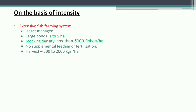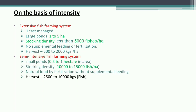On the basis of intensity, there are three systems: Extensive, Semi-Intensive, and Intensive fish farming. In extensive fish farming, management is very low, done in large ponds of 1 to 5 hectares, stocking density is 5,000 fishes per hectare, no feeding or fertilization is given, and output is 500 to 2,000 kg per hectare.